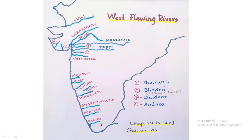If they ask about Dadar, we have to know that Dadar flows in Gujarat. It is the best flowing river — it is very, very important. Kindly take a screenshot of this picture.